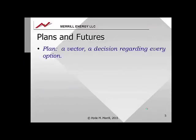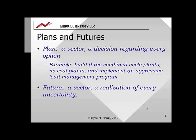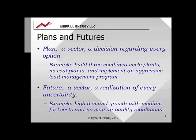A plan is a vector made up of a decision — yes or no — regarding every option. For example, one plan would be to build three combined cycle plants, no coal plants, and implement an aggressive load management program. A future is also a vector: it's a realization of every uncertainty. For example, one future would be high demand growth with medium fuel costs and with no new air quality regulations.